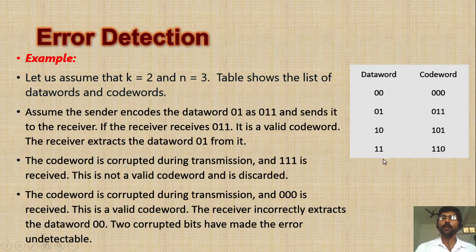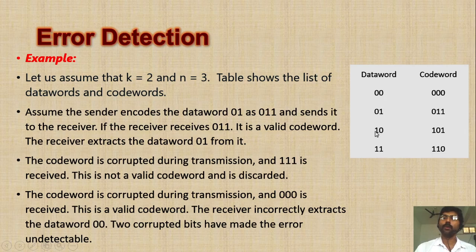For example, these are 2-bit data words that I have to transmit. They are converted into codewords in this fashion. If I want to transmit 0,0, the generator always converts it into 0,0,0. Similarly, if I want to transmit 1,0, the generator always converts that into the codeword 1,0,1 — it never converts it into any other codeword. These are the valid codewords for these data words.